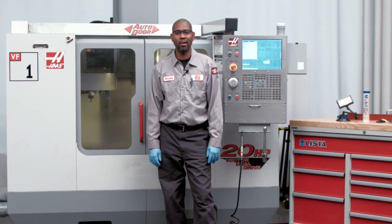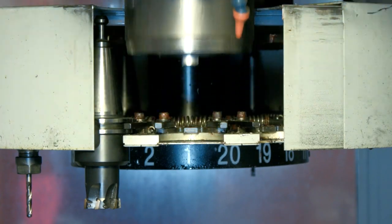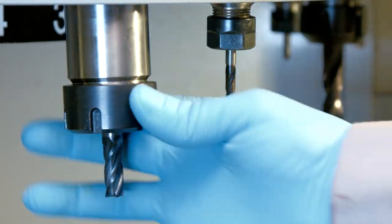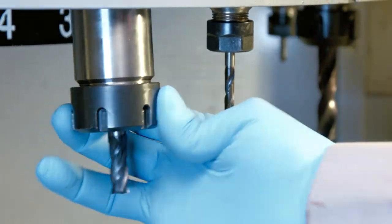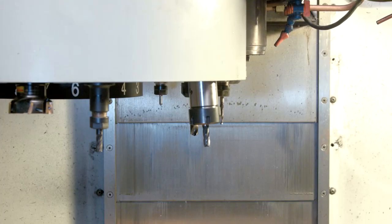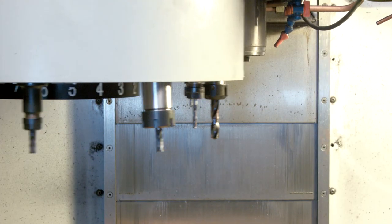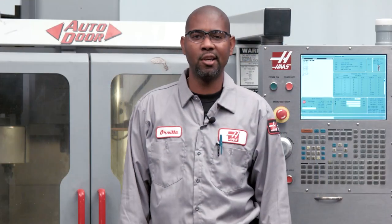Today we'll be servicing the carousel plate on this umbrella style tool changer. On this VF1 we've noticed some of the tools are loose in the carousel. This can lead to tools falling out during a tool change as well as damaging your tools, parts and spindle. During this process we'll check and replace several components if necessary to ensure the system is in good working condition.